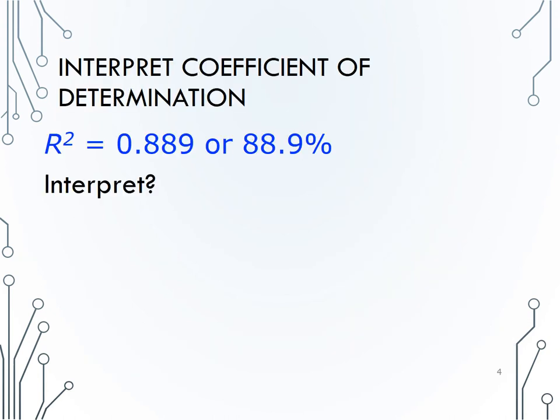Let's interpret that coefficient of determination, or r squared value, of .889 or 88.9%. Pause the video, write your interpretation, then play to check that you were correct.